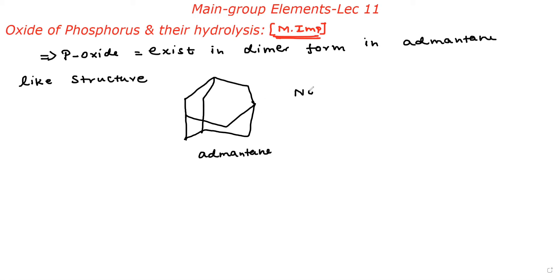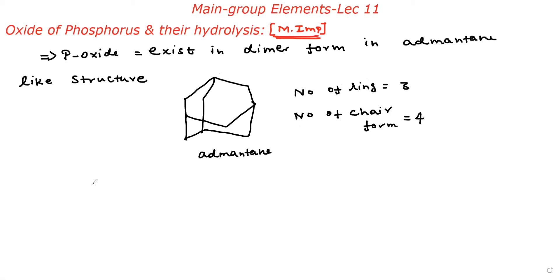In this adamantane system, what is the number of rings? The number of rings is equal to three rings. Now find the number of chair forms — the number of chair forms is four. Understand? Next point, very important: in the oxide of phosphorus, each phosphorus has SP3 hybridization — very important point, please note.